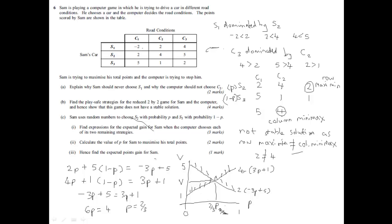And to find the V value for this last mark here, all we simply do is put our 2 thirds into one of the equations. So, if we use 3P plus 1, that gives us 3 times 2 thirds plus 1. Well, 3 times 2 thirds is 2, isn't it? So, it's 3. So, probably best to write it the way it is in the question. Gain for Sam equals 3.